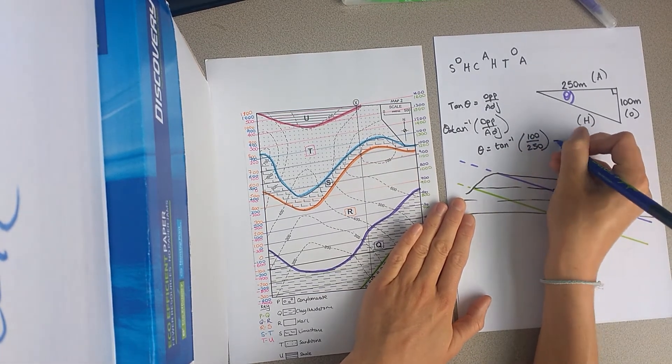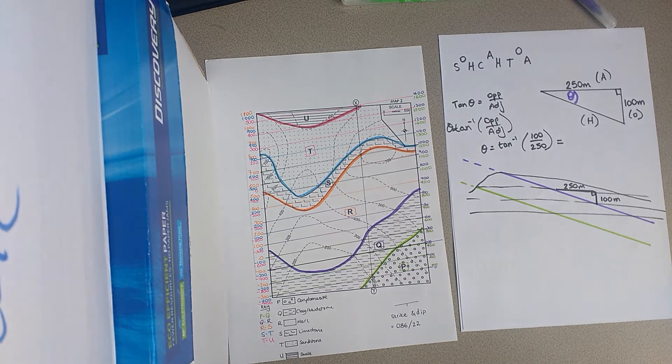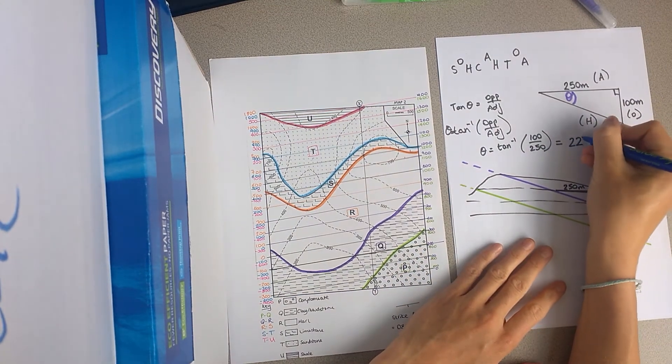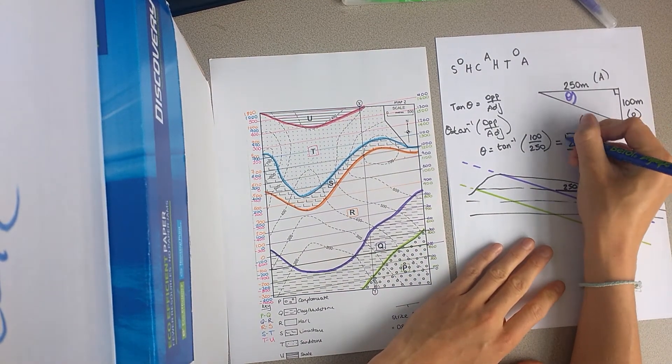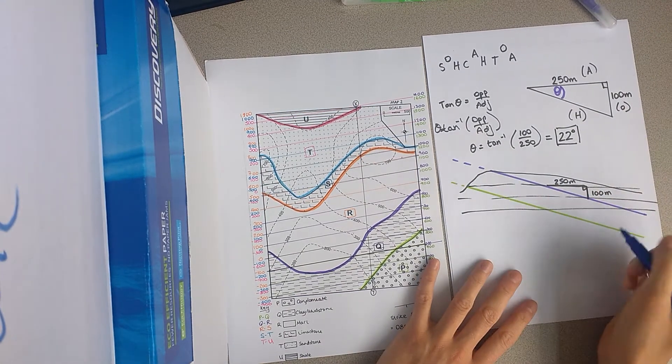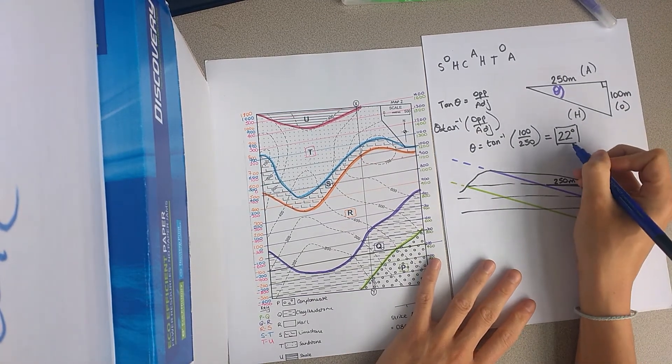So, okay, and so if we work that out, then we will get an answer of 22 degrees. So, our dip for this unit is 22 degrees, that is the answer.